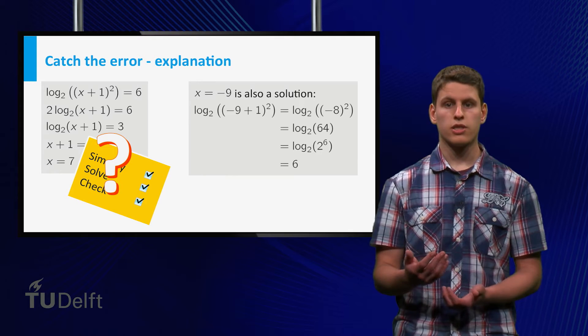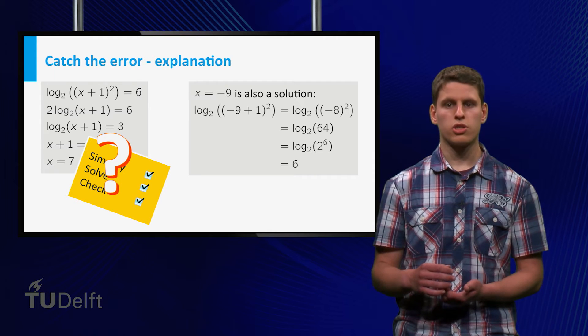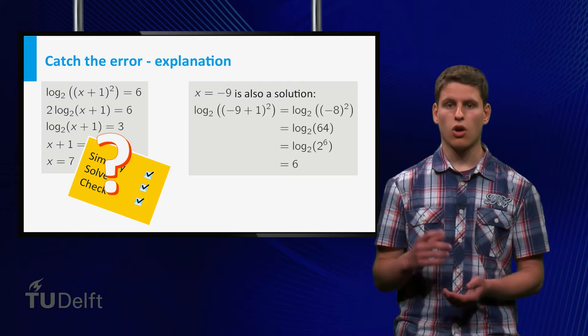This is because we took the exponent 2 out of the logarithm. Recall that logarithms are only defined on positive numbers, and squares are always positive.